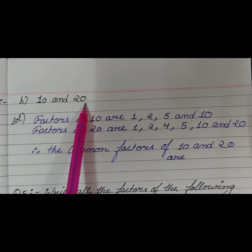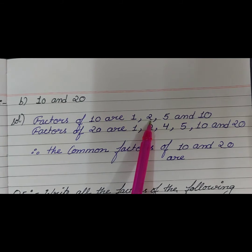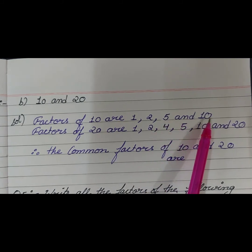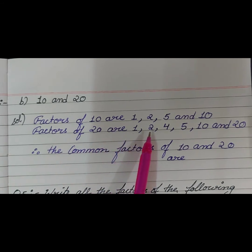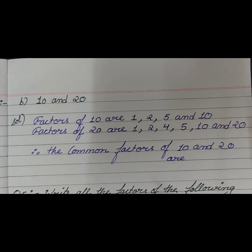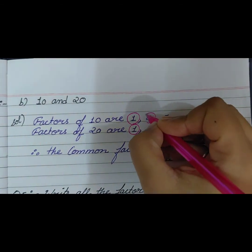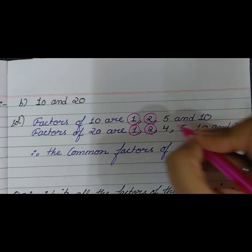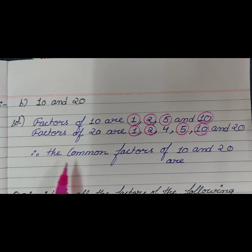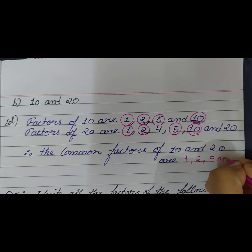Part B: 10 and 20. Now find the common factors of 10 and 20. Factors of 10 are: 1, 2, 5, and 10. We cannot go beyond 10. Factors of 20 are: 1, 2, 4, 5, 10, and 20. Now circle the common factors. The common factors of 10 and 20 are 1, 2, 5, and 10.